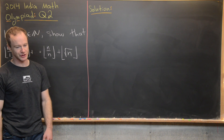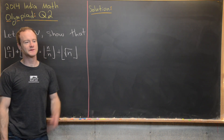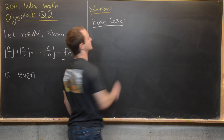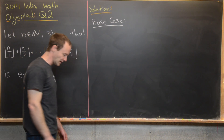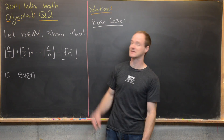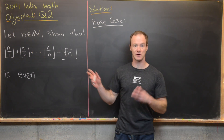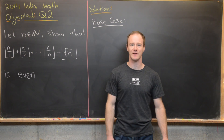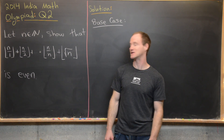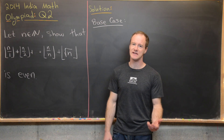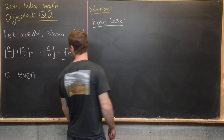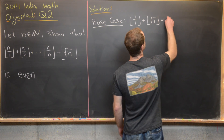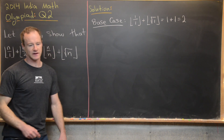Now we're ready for our solution. We're going to do a proof by induction, starting with the base case n = 1. Note that n = 0 causes a zero in the denominator, so we start at n = 1. That gives us floor(1/1) + floor(sqrt(1)) = 1 + 1 = 2, which is clearly even.